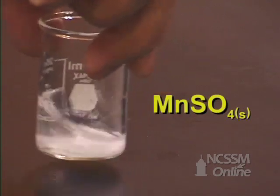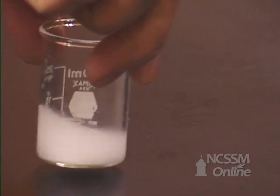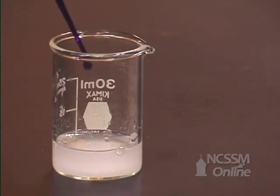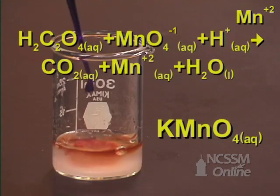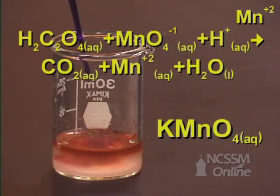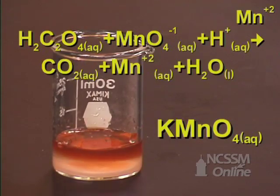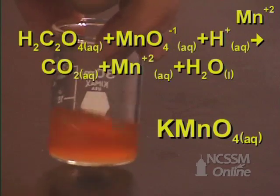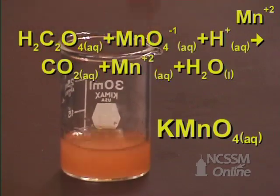The manganese sulfate acts as a catalyst for the reaction. We will now add some potassium permanganate. We notice that the reaction is relatively rapid compared to the reaction between the oxalic acid and permanganate at room temperature. The catalyst speeds up the rate of the reaction.